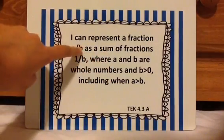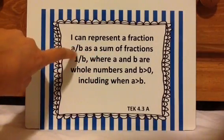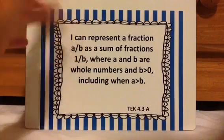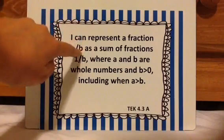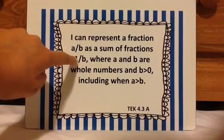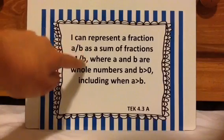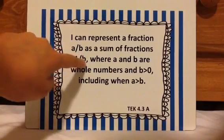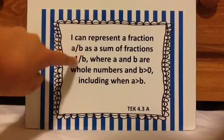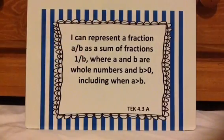You are representing a fraction 1 over B — let's say B is 3, so it's going to be like 1 third. Or let's say B is 4, so it'll be 1 fourth. B is 5, 1 fifth. You're going to just look at it as piece by piece.